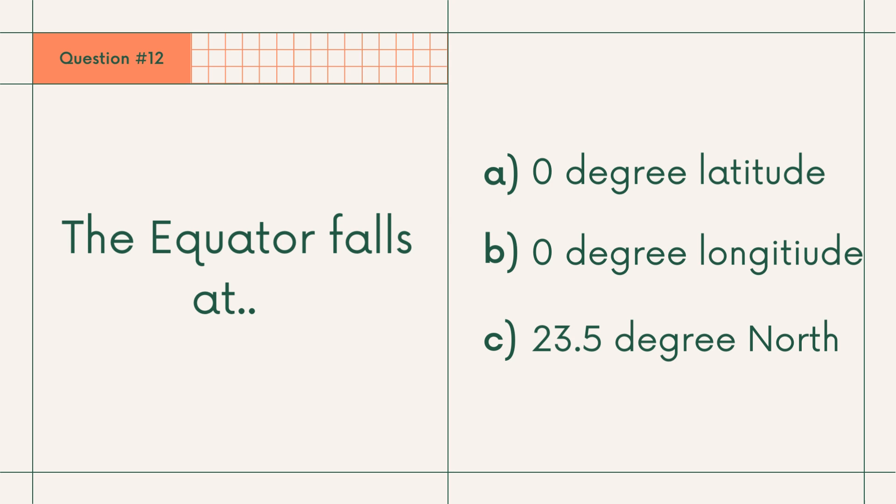Question number 12: The equator falls at A. 0 degree latitude, B. 0 degree longitude, or C. 23.5 degree north. Answer: A. 0 degree latitude.